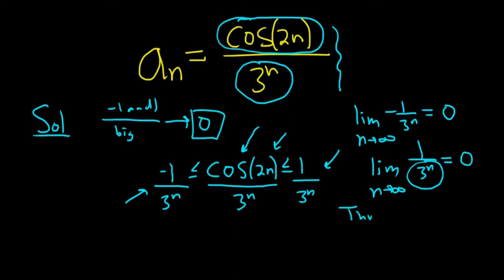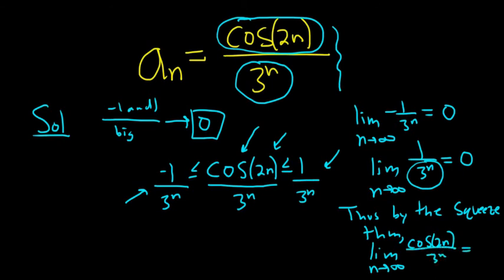So thus, by the squeeze theorem, whatever's trapped inside, which is our original sequence, cosine 2n over 3 to the n also goes to 0. So the answer is that it converges, and the limit in this case is 0. That's it.